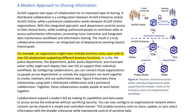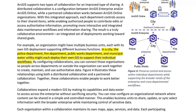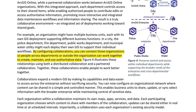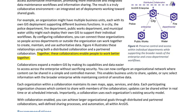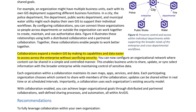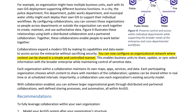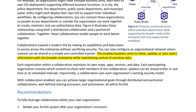With this integrated approach, each department controls access to their shared items, while enabling authorized people to contribute edits or access authoritative information. For example, in a city, the police department, fire department, public works department, and municipal water utility might each deploy their own GIS. By configuring collaborations, you can connect those organizations so people across departments can work together to create, maintain, and use authoritative data. Figure 4 illustrates these relationships using both a distributed collaboration and a partnered collaboration.